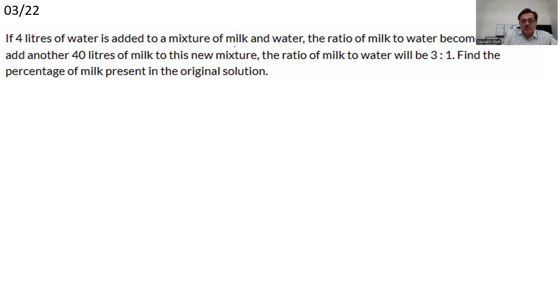4 liters is added to the original. Original is something, 4 liters is added and the ratio becomes 1 is to 2. We can start with this. Let this be the original for some moments. We'll start calculating from here. So right now, we'll say that the ratio of milk and water is 1 is to 2. And after 40 liters of milk is added to this new mixture, the ratio changes to 3 is to 1. Water is not added. Water is not subtracted now. That means water should remain the same.